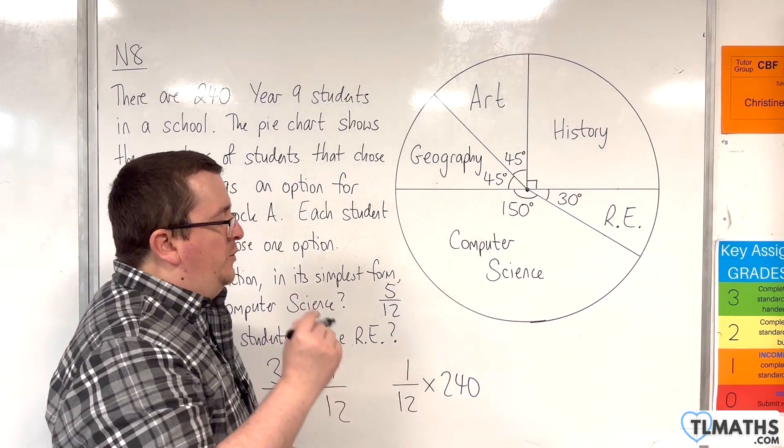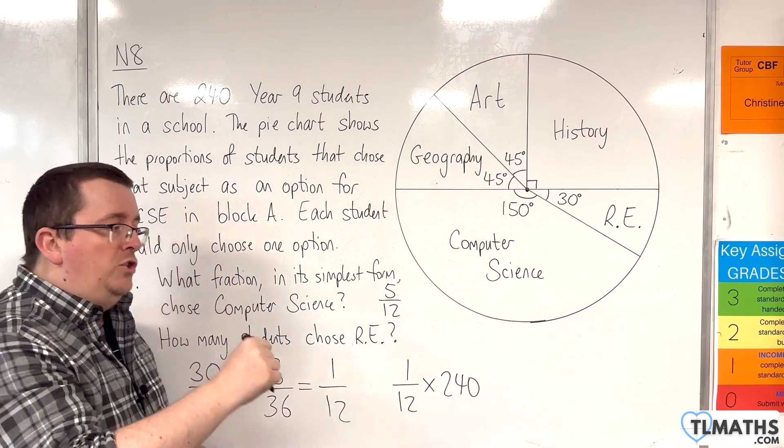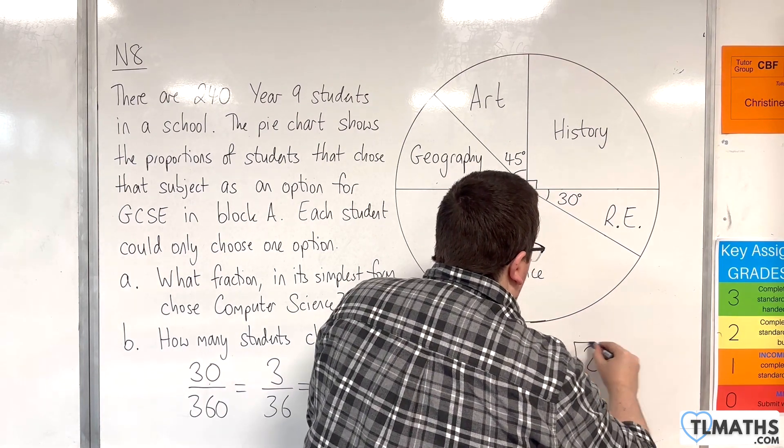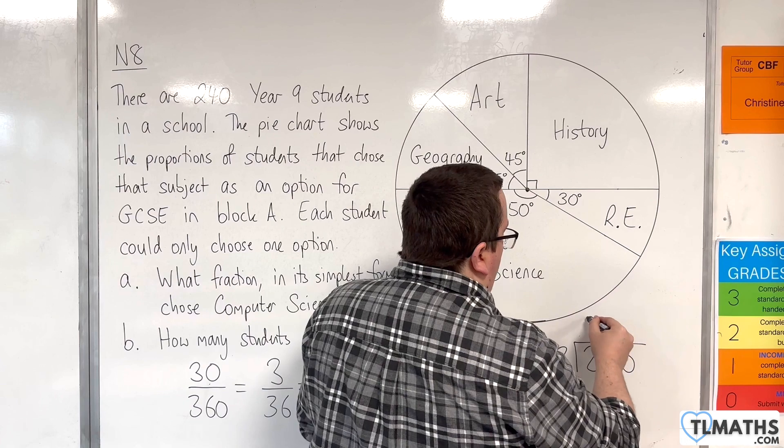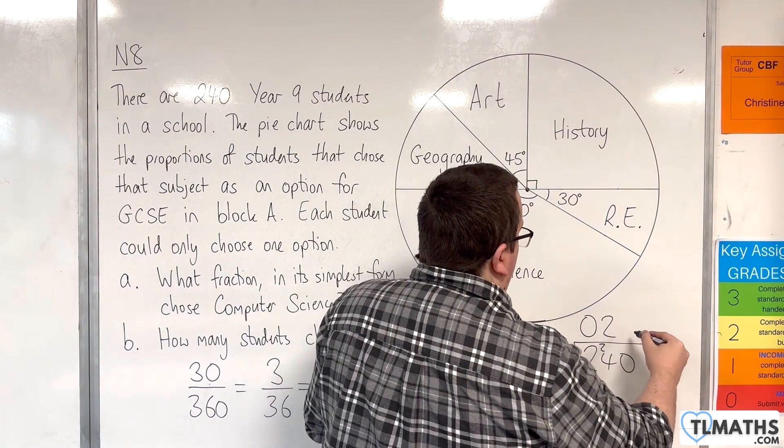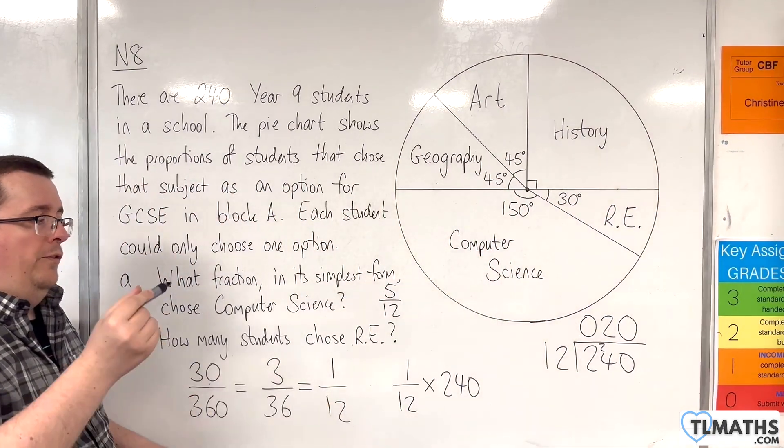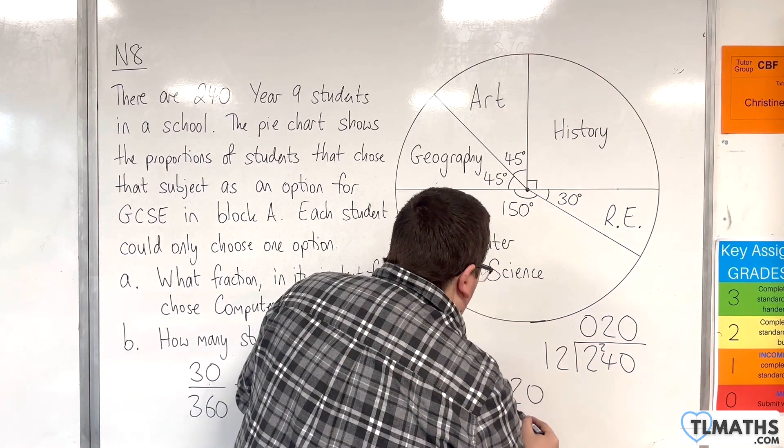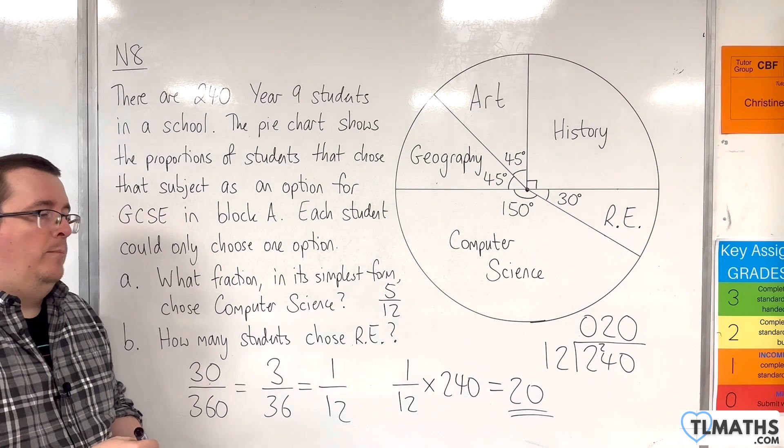1 twelfth of 240 means I need to divide 240 by 12. 12 into 2 goes 0. 12 into 24 go 2 with 0 remainder. So, 1 twelfth of 240 is 20. There are 20 students who chose RE in block A.